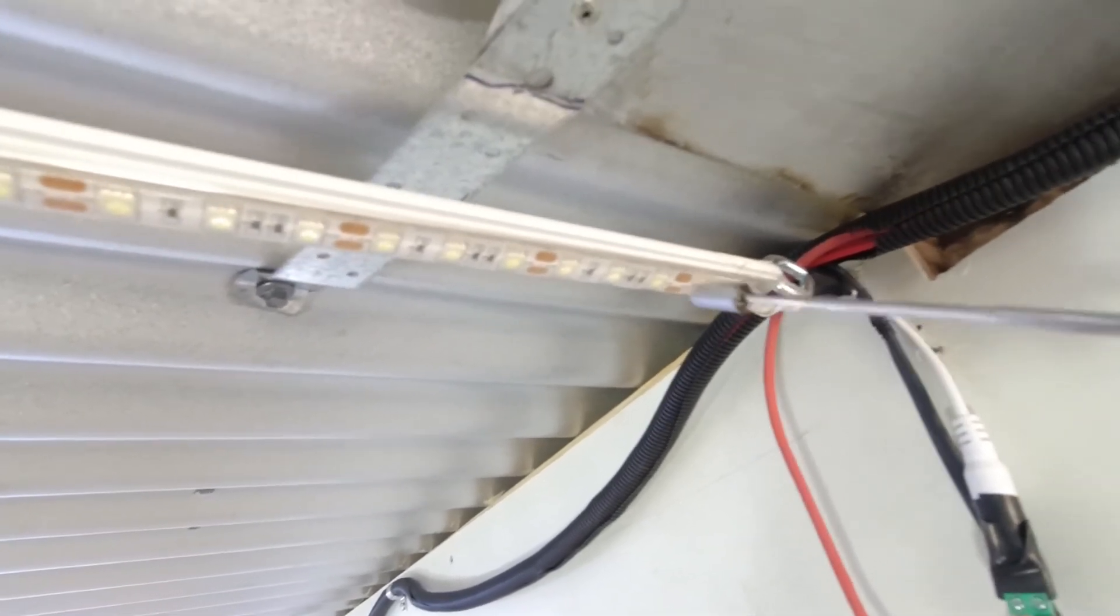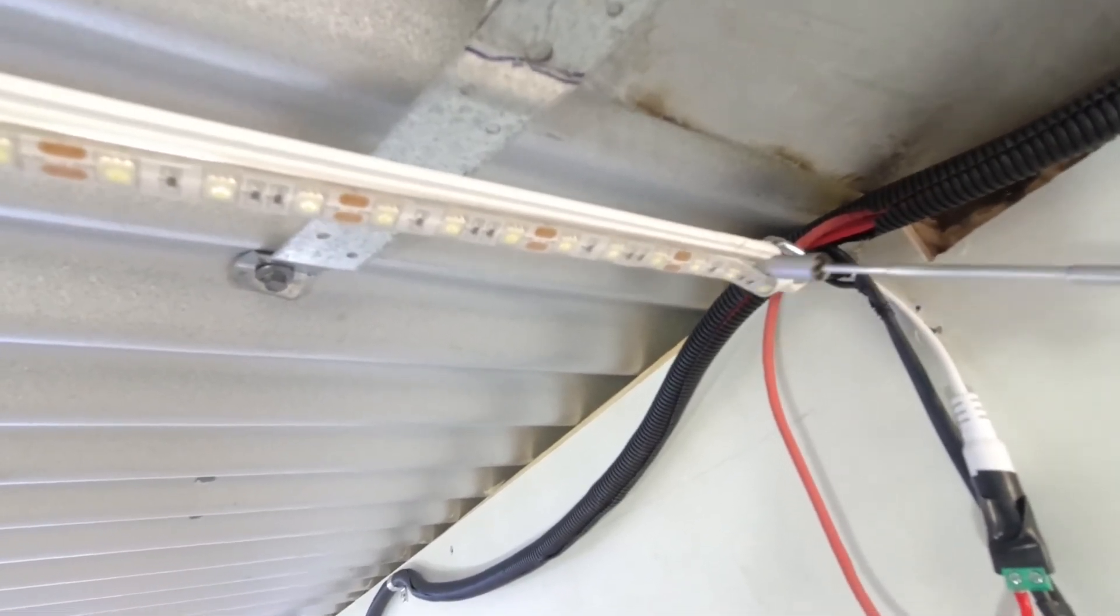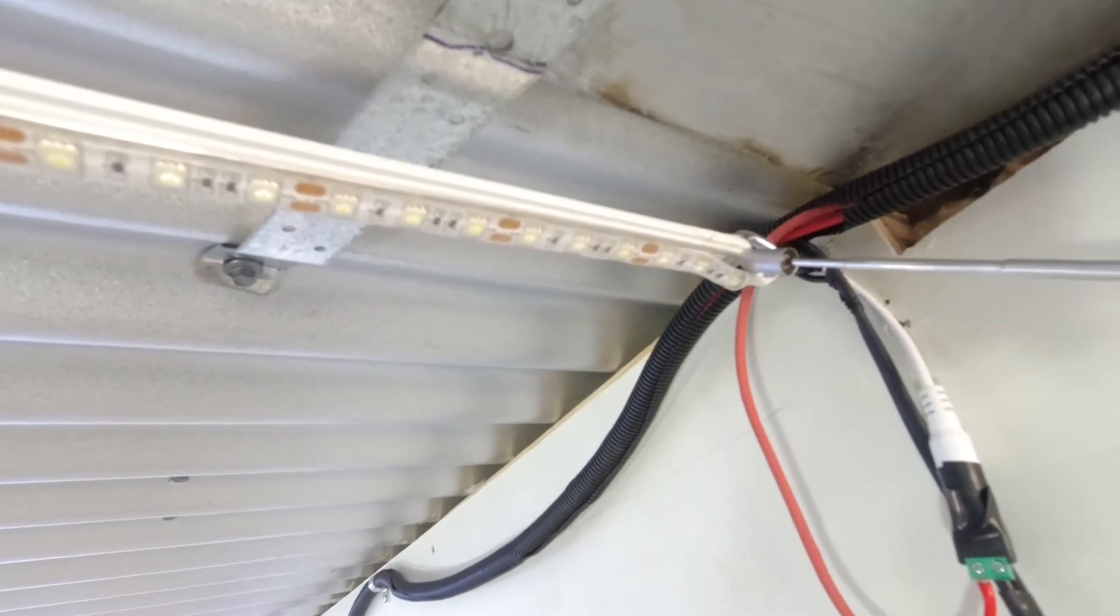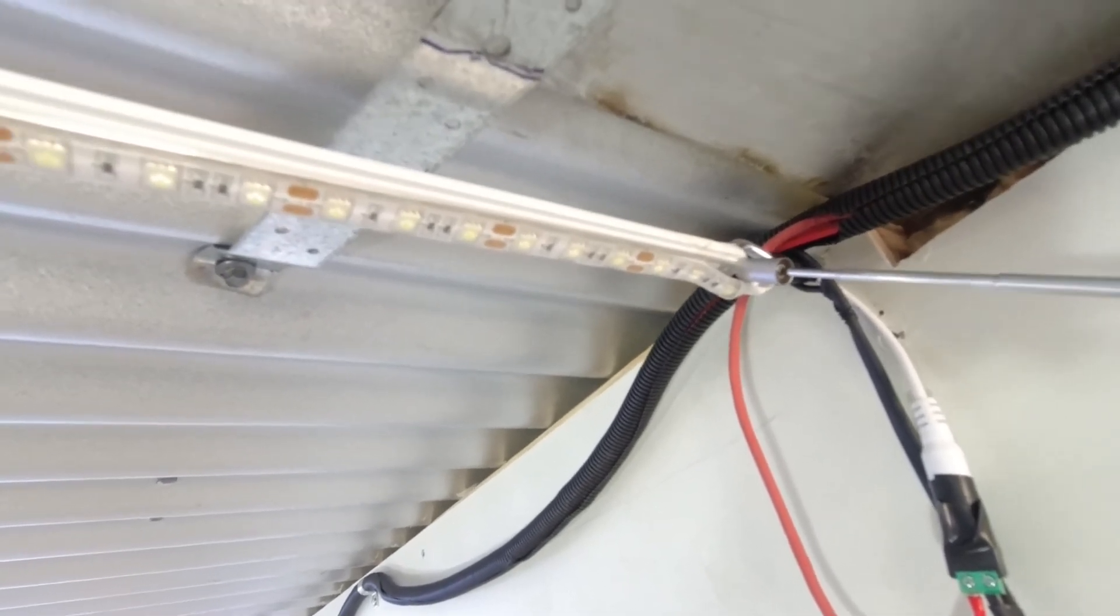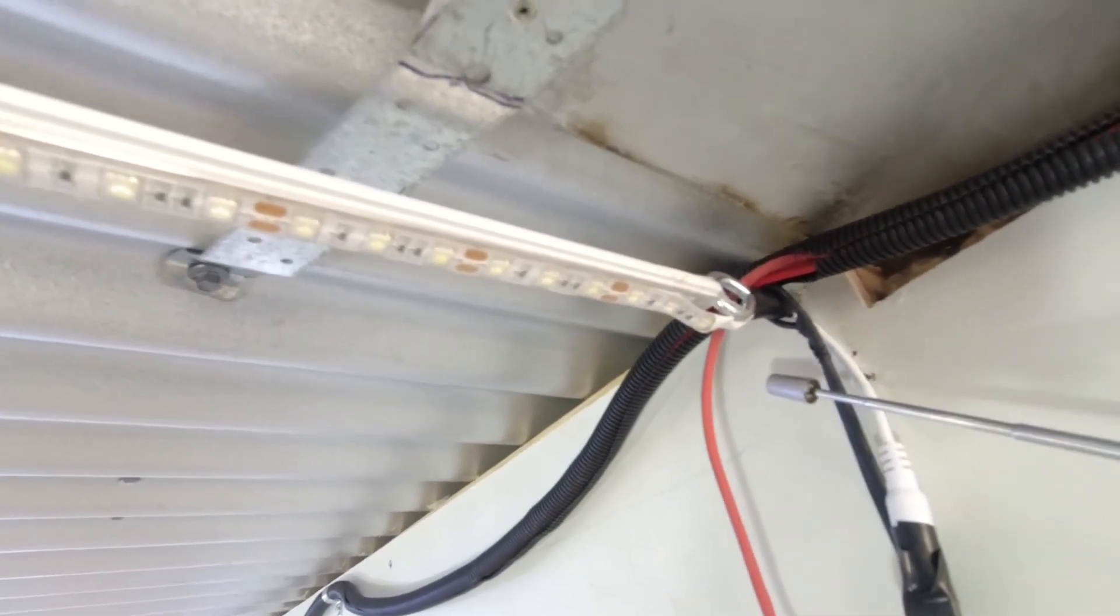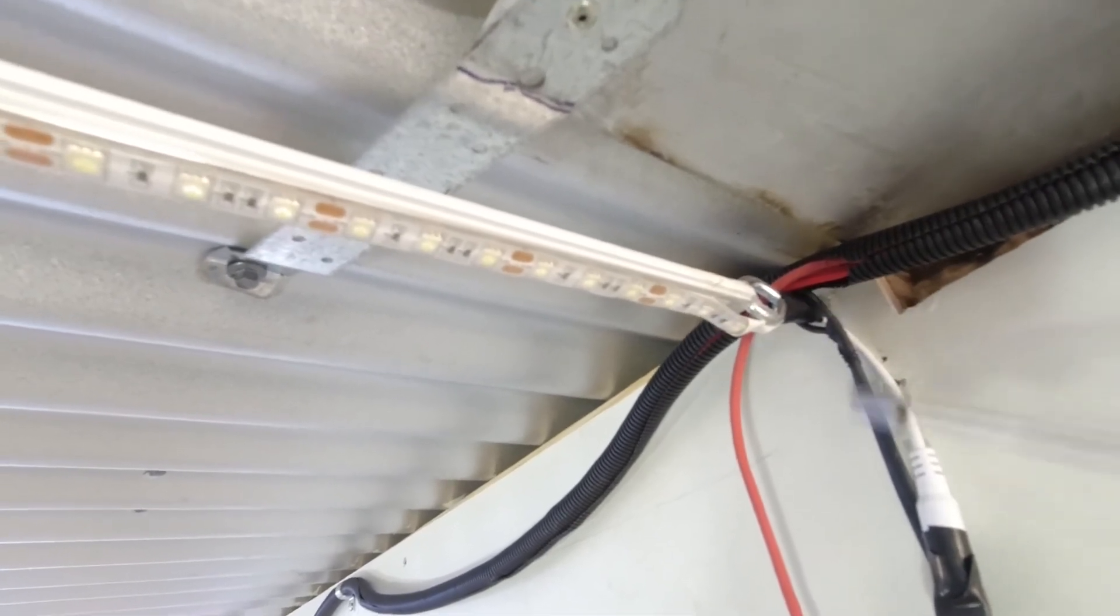Now the benefit of this is that if the LED strips get hot, the aluminum strip is a heat sink for the LED strip. So that's how this is secured.